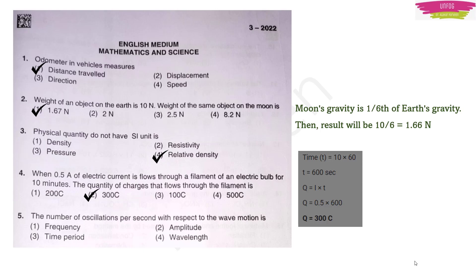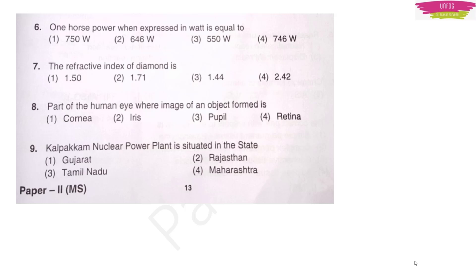The number of oscillations per second with respect to wave motion is frequency. One horsepower expressed in watts equals 746 W. The refractive index of diamond is 2.42. The part of the human eye where the image of an object is formed is the retina. Kalpakkam nuclear power plant is situated in Tamil Nadu — you can guess from the name of the place.